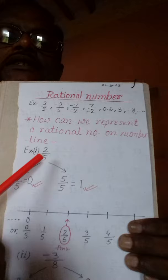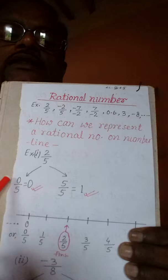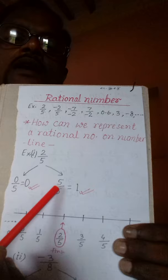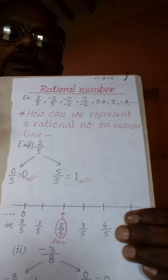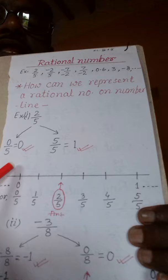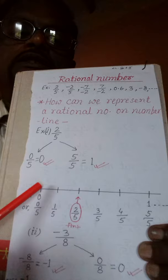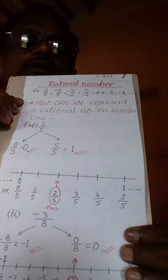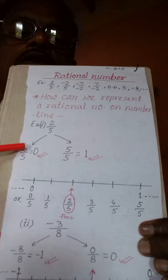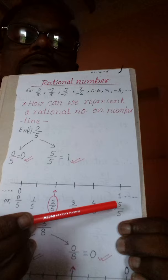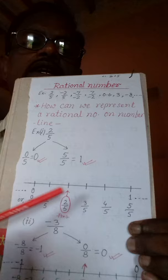उसी तरह से right side का integers भी मालूम कर लेंगे। इस 2 को आगे बढ़ाएंगे — 3, 4, 5 जब करेंगे — तो 5 by 5 कट करके 1 हो जाएगा। number line पर left side में 0 दिखा देते हैं, right side में 1 दिखा देते हैं। और उसके just नीचे rational number वाला number भी लिखते हैं — 0 के नीचे 0 by 5 और 1 के नीचे 5 by 5 show करेंगे।